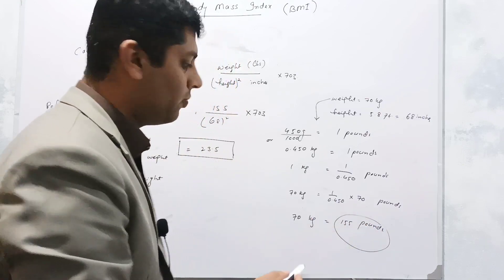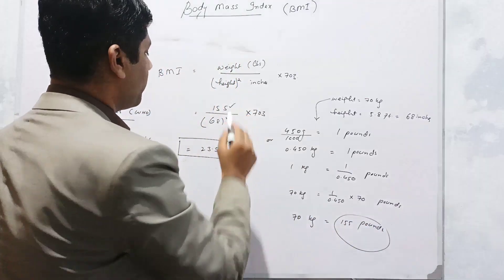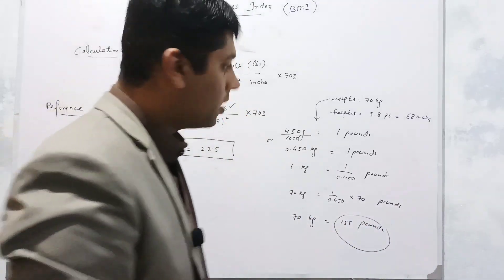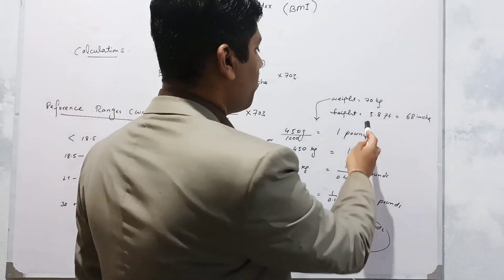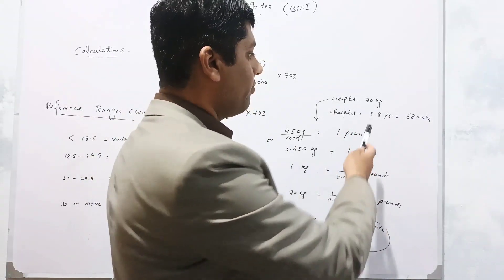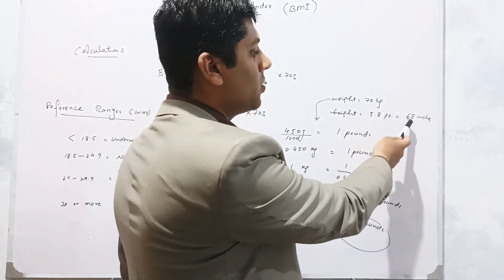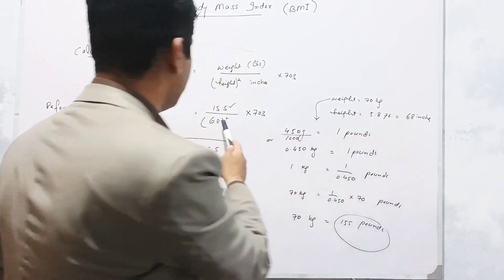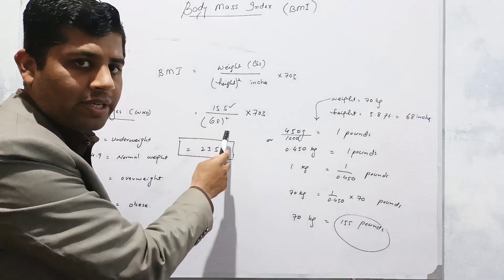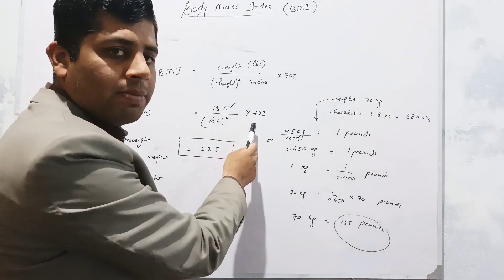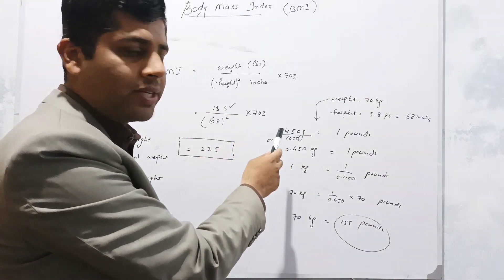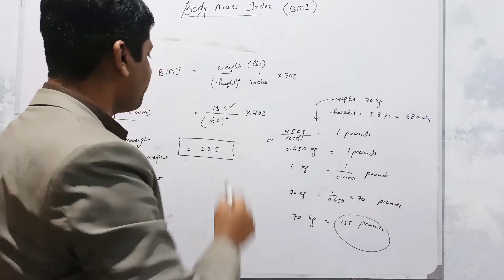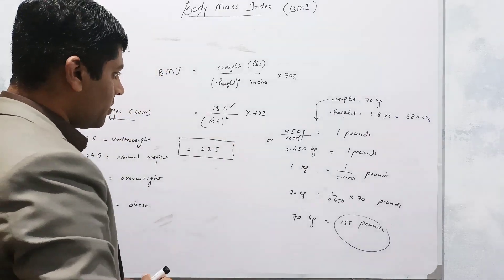So my weight in pounds is 155, which I put in the formula. For my height, 5.8 feet equals 5 feet, which is 60 inches, plus 8, so 68 inches. I put this in the formula, the square of it is taken, it's multiplied by a factor of 703, which is a constant factor for determination of BMI.